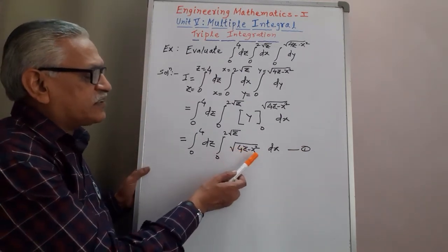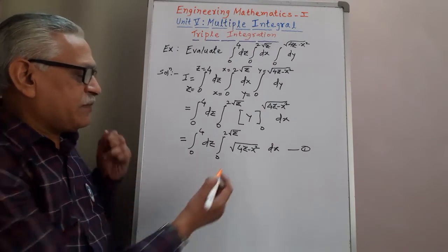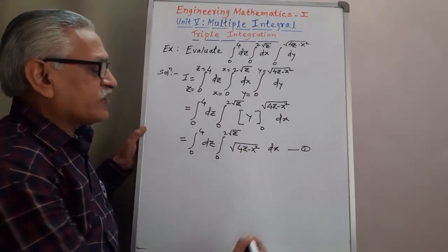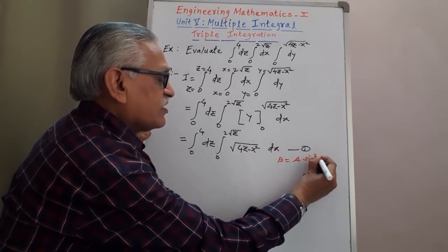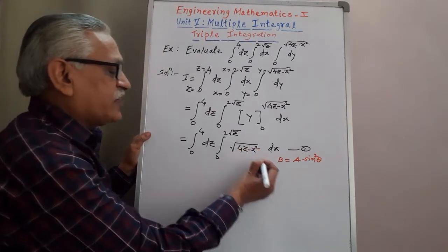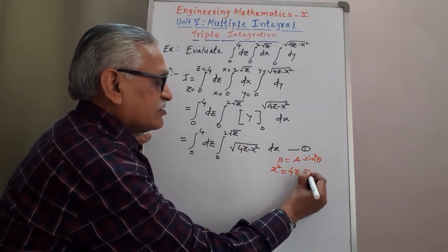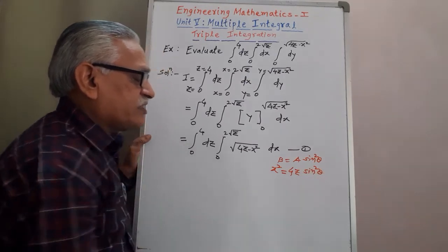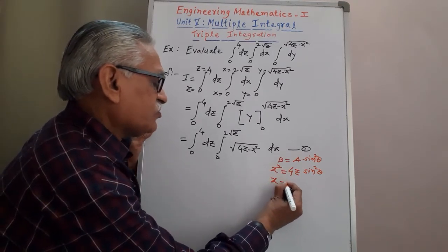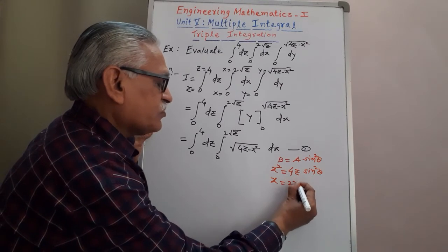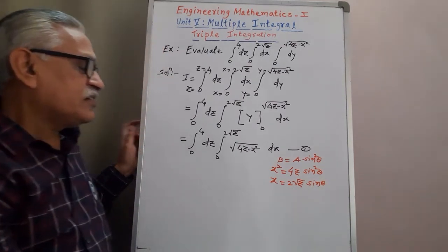This integral contains a binomial expression in the form A minus B. Since it is in that form, we use the standard substitution B equals A sin squared theta for the evaluation. Here, B is X squared and A is 4Z. So X squared equals 4Z sin squared theta. Taking the square root, X equals 2 root Z sin theta — this is the standard substitution.